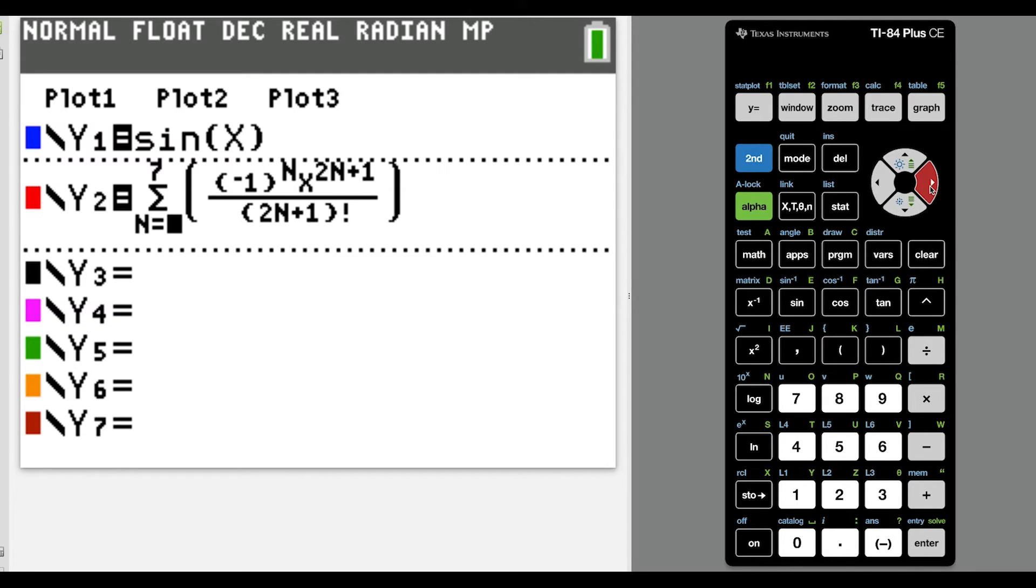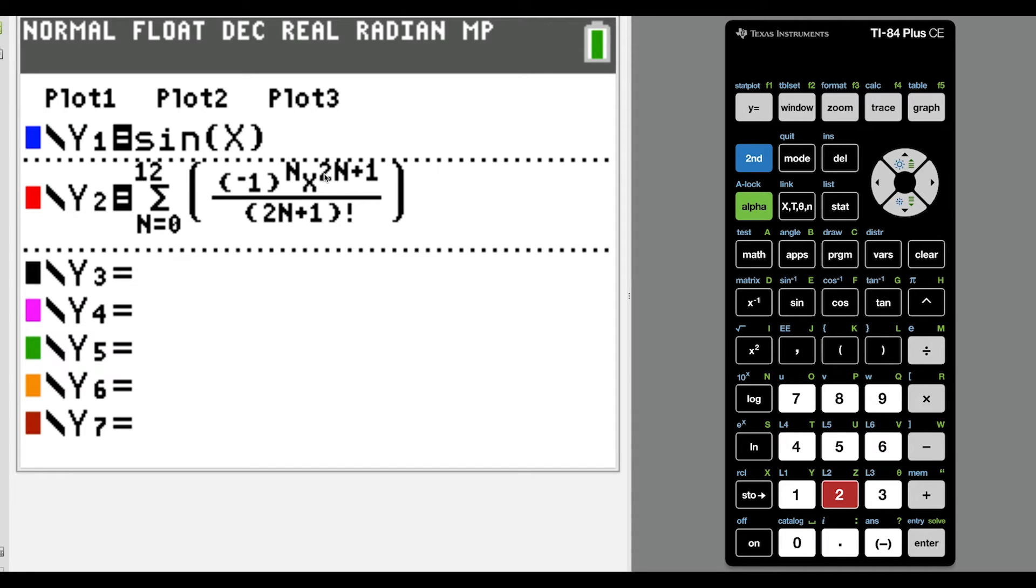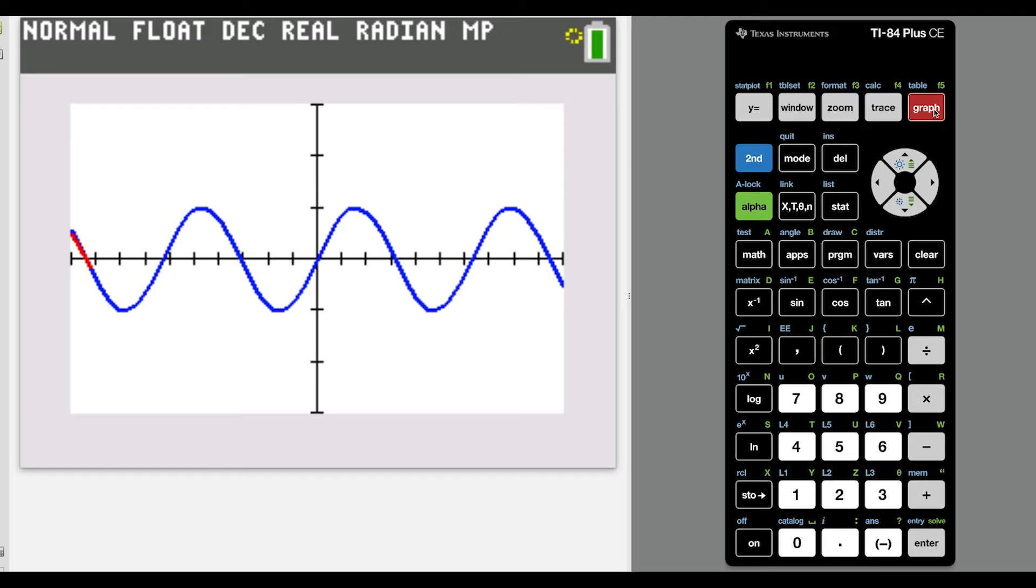So if I really want to be dramatic here, say I really want to go over the top with this, let's say I go out from n equals 0 to n equals 12, which would give us x to the 24 plus 1. So that would be a twenty-fifth degree Taylor polynomial. And you can see it just about covers the whole curve.